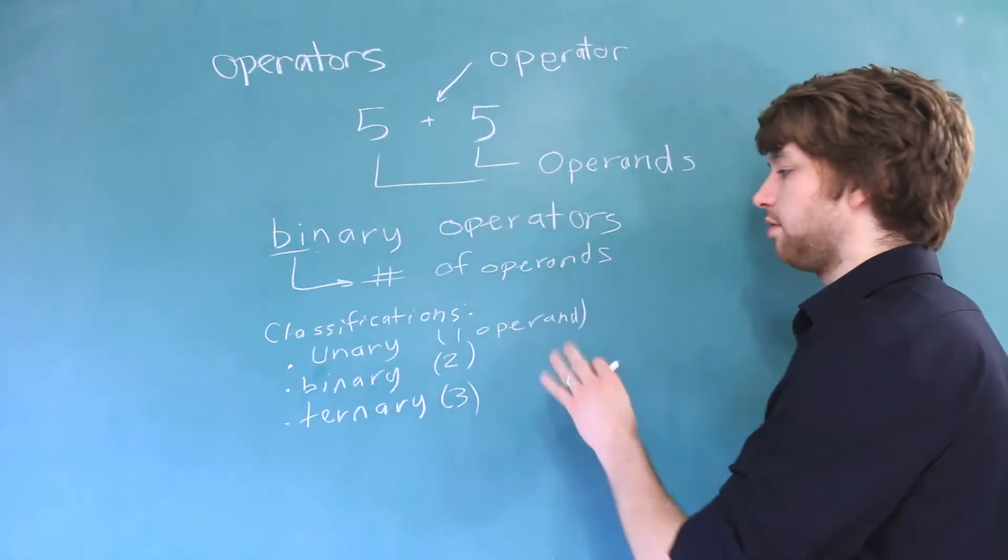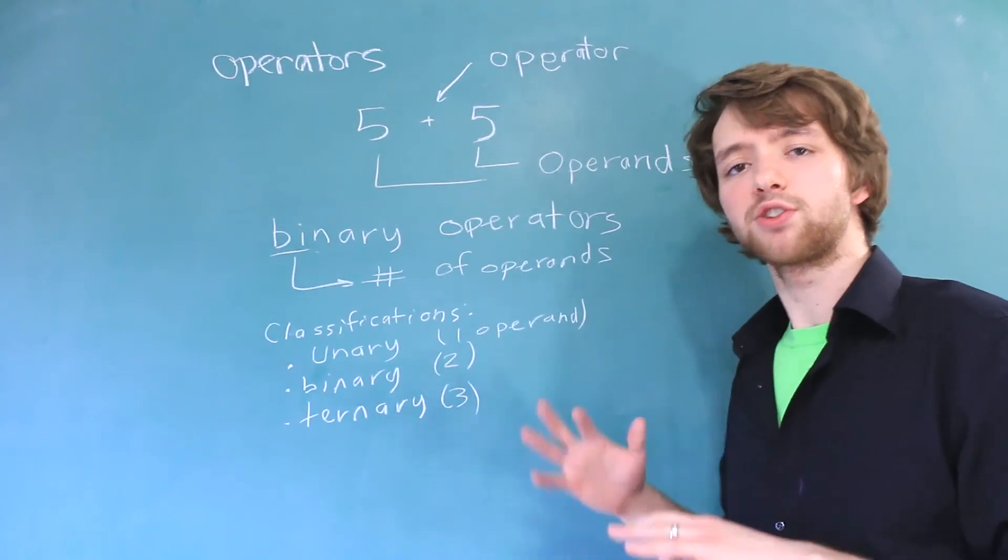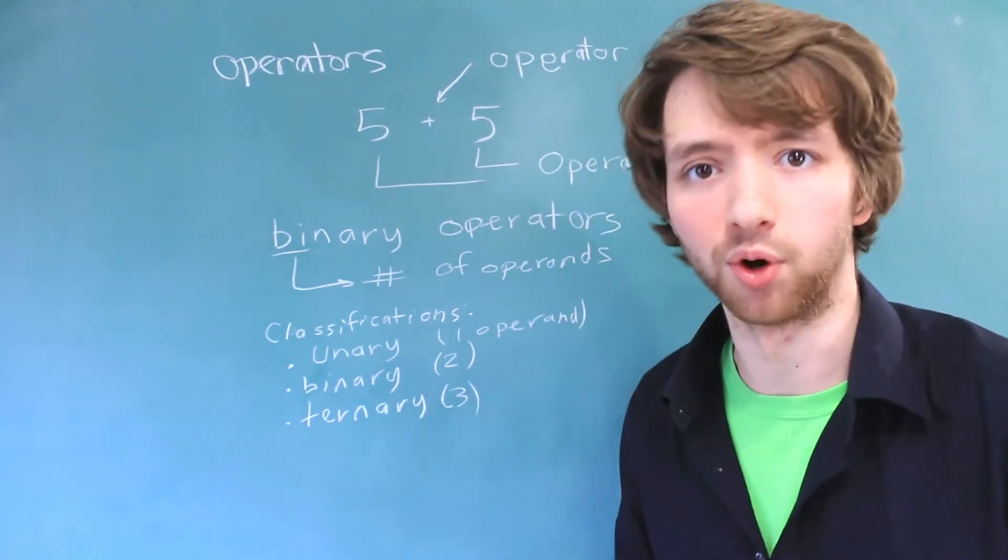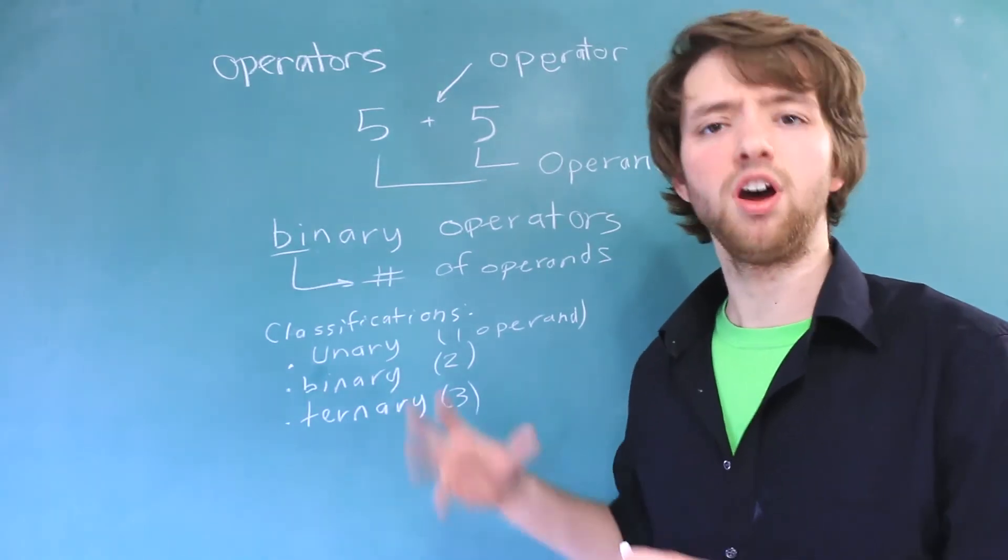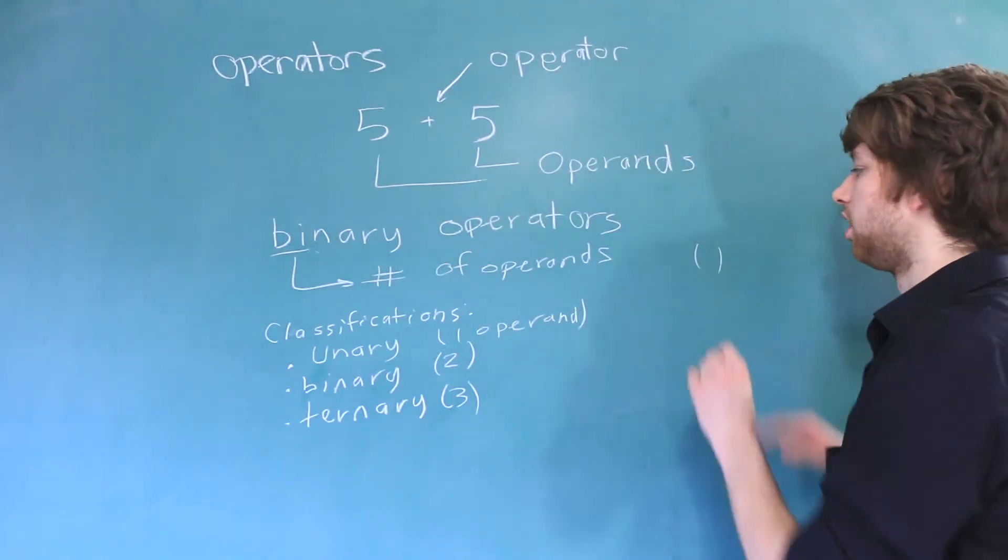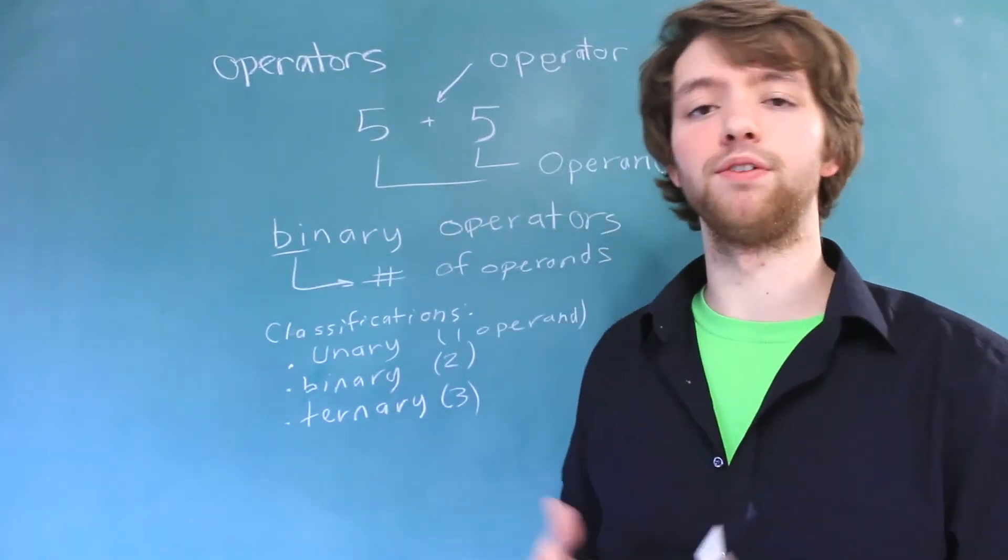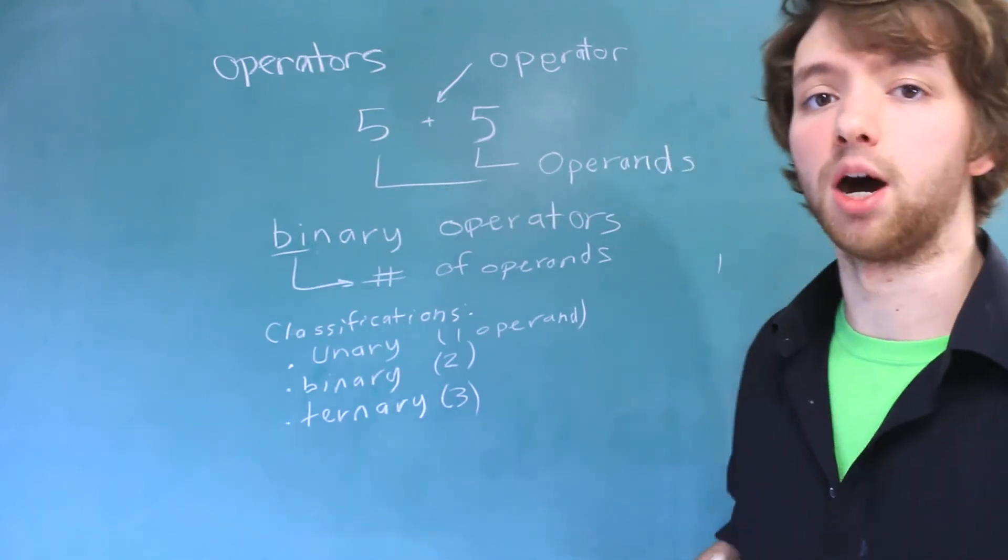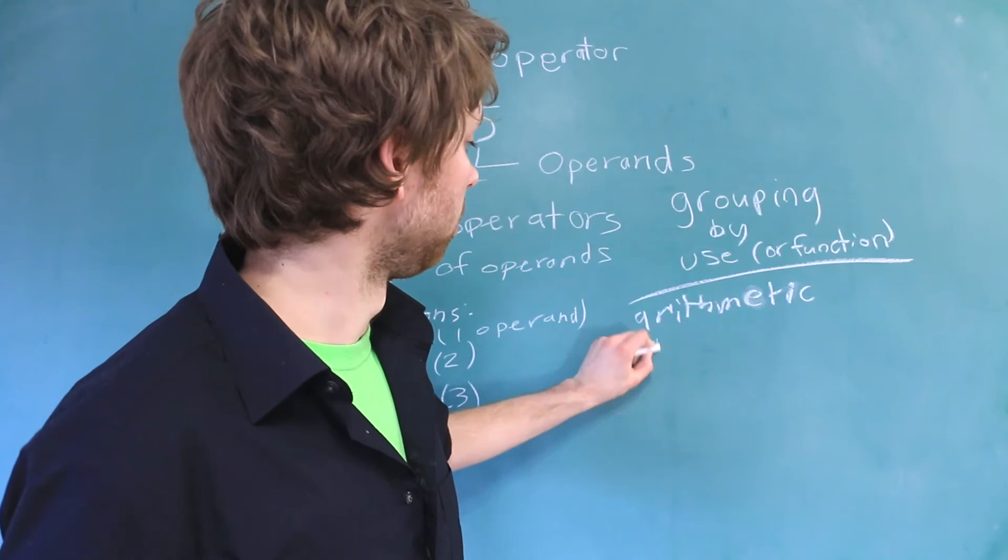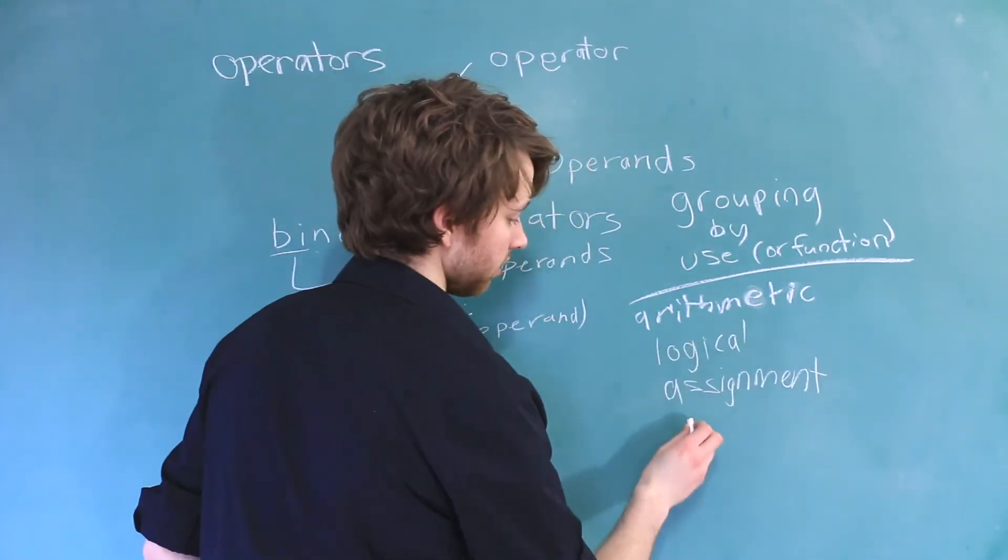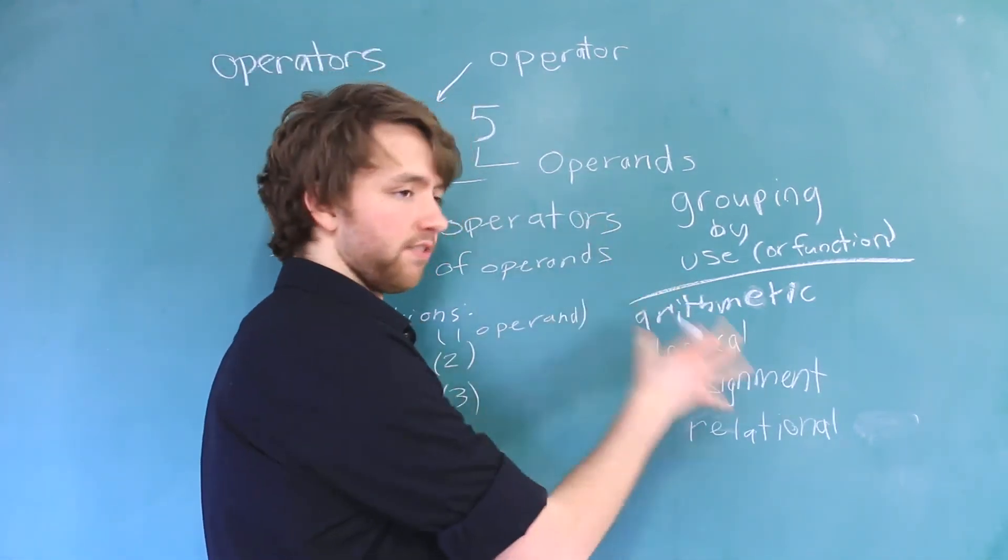Classifying the operators by the number of operands works great when you're first starting out, but there's actually another classification. You know, I've got to make it even more confusing, right? And this is grouping them by function. Not function like computer science functions that you call, but function meaning, what do they do? One example of a classification of this is arithmetic operators. Some of the other classifications of operators are logical operators, assignment operators, and relational operators. And there's some more, but these are the foundational ones.